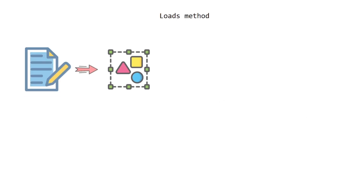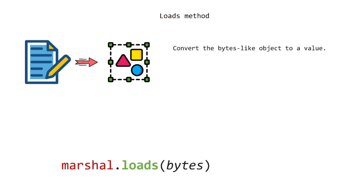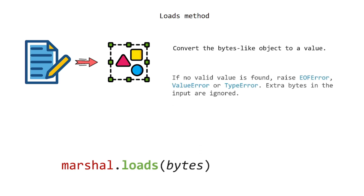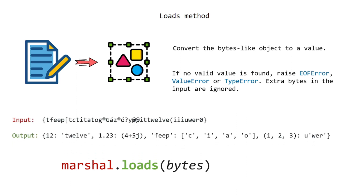The loads method converts the bytes-like object to a value. If no valid value is found, it raises an EOFError, ValueError, or TypeError. Extra bytes in the input are ignored.